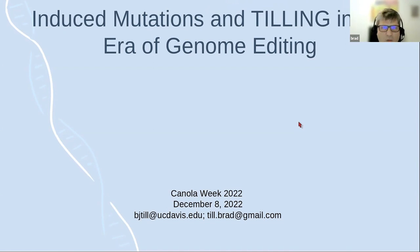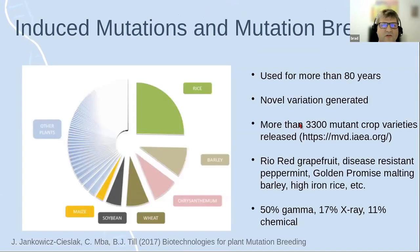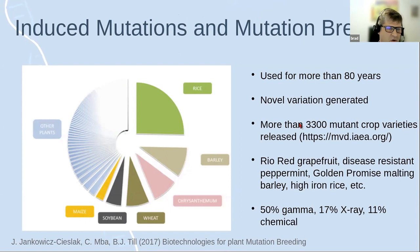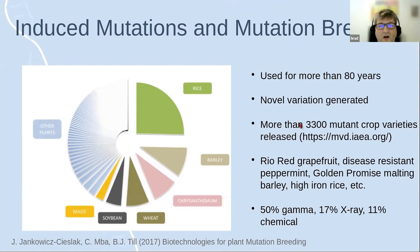Starting with background on induced mutations: the idea that you can create novel genetic variation orders of magnitude faster than happens spontaneously in nature was discovered more than 80 years ago. Plant scientists quickly picked this up and started using it to develop new crop varieties, and the first variety created using ionizing radiation was released in the 1930s.